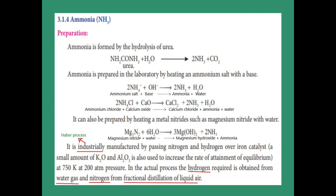Ammonium chloride (NH₄Cl) reacted with calcium oxide gives calcium chloride, 2 moles of ammonia, and 1 mole of water. Another preparation: on heating a metal nitride — for example, magnesium nitride Mg₃N₂ — and then adding water, the OH⁻ reacts with magnesium to give Mg(OH)₂, and H⁺ reacts with nitrogen to give ammonia NH₃.